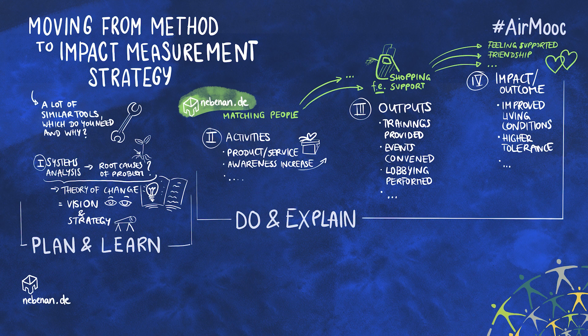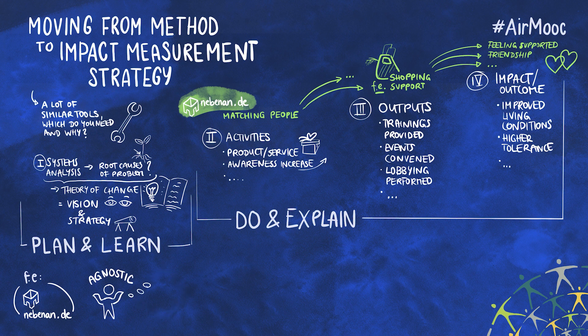In relation to Nebenan.de, but really in relation to any organization, there are three different options of how you can go about assessing impact. First, you can choose to be agnostic — as long as the organization is running smoothly and stably, you wouldn't even go about gathering any impact related data.